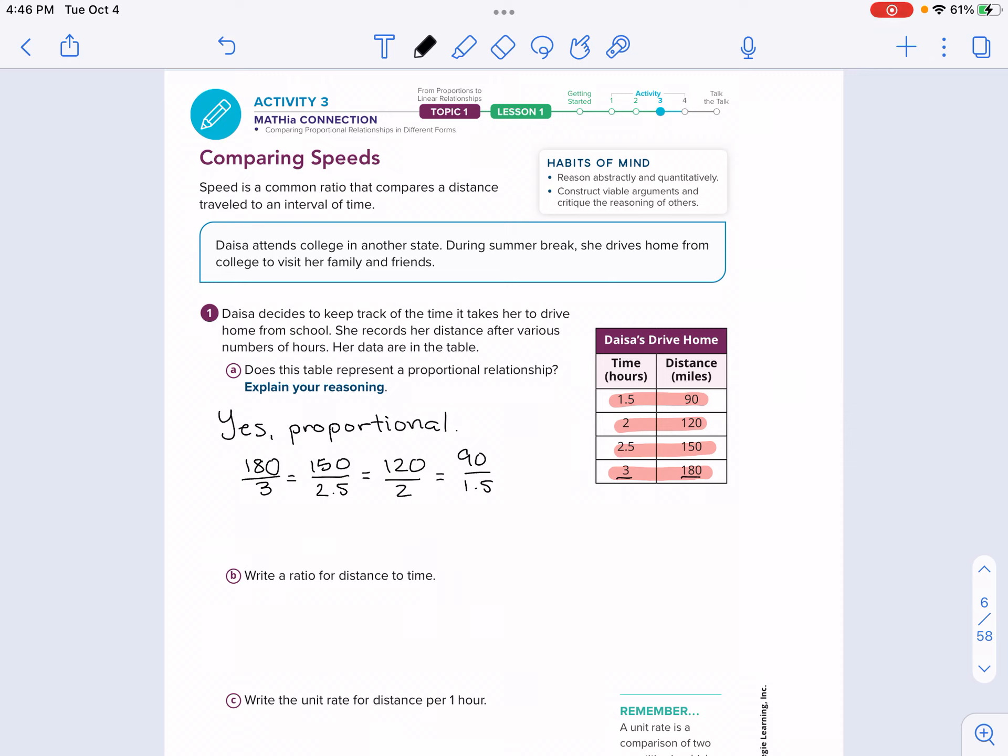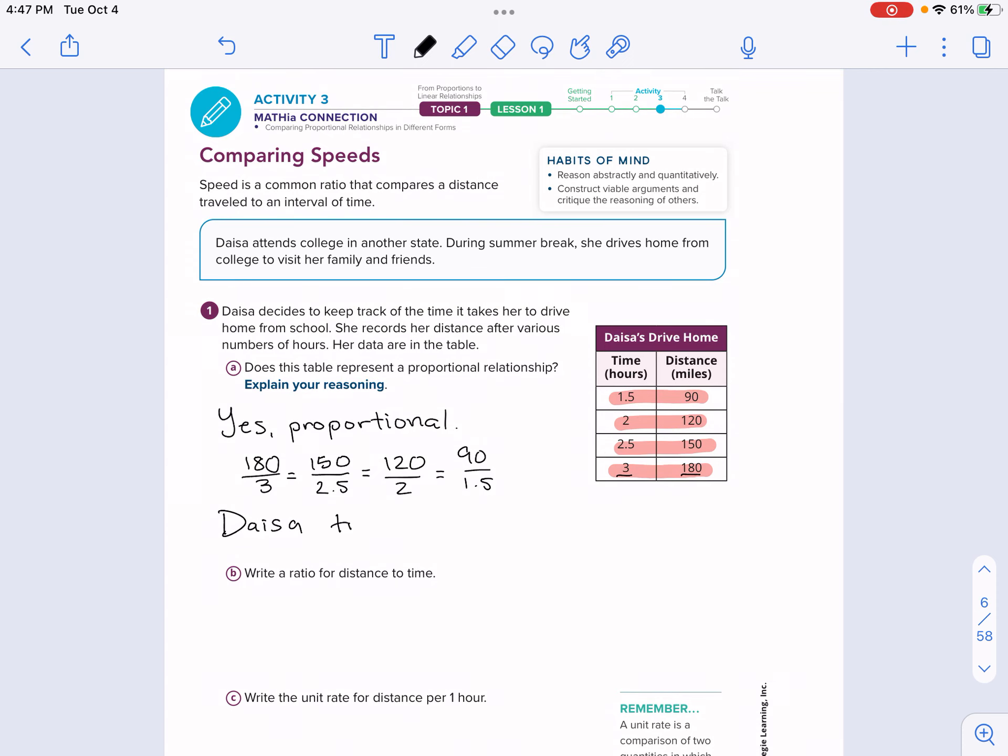That should be equal to 120 miles every two hours. And then finally, 90 miles in an hour and a half, 1.5. Now these all simplify to equal the same thing. We'll get to that in the other problems. But the reason that this is proportional is, it should go through the origin if graphed. So Daisy would travel zero miles in zero hours. This would be her barely even starting the car. So if we start at zero, zero, that means it is proportional and that all of these ratios should be equal.